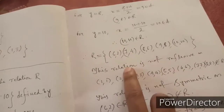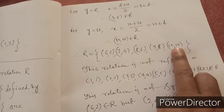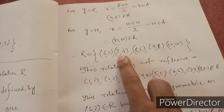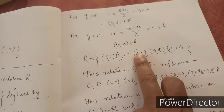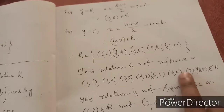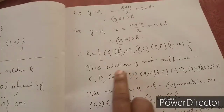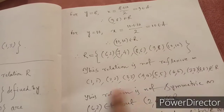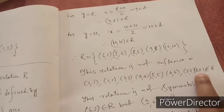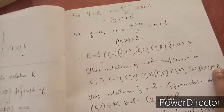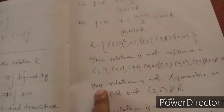Only (10,10) belongs to R. Elements like (1,1), (2,2), (3,3), (4,4), (5,5), (6,6), (7,7), (8,8), and (9,9) do not belong to R. So this relation is not reflexive.